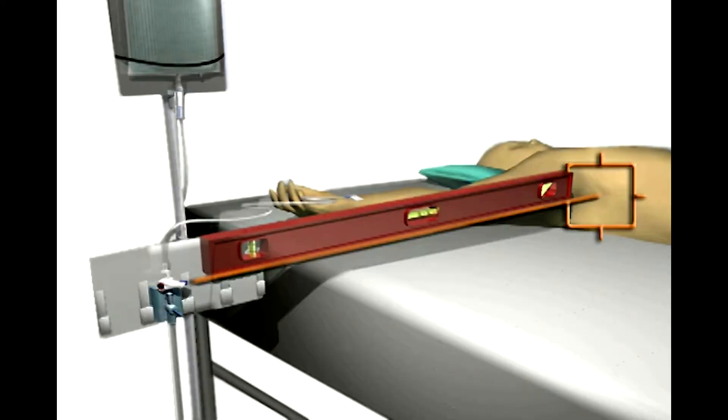Step 2: For intravascular pressure monitoring, level the transducer to the patient's phlebostatic axis, which can be found at the midpoint between the anterior and posterior chest wall at the 4th intercostal space. It is important to maintain the level of the transducer with the phlebostatic axis at all times while monitoring to ensure accurate pressure readings.